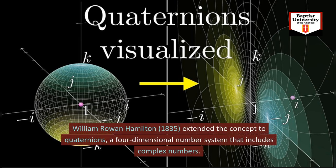William Rowan Hamilton, 1835, extended the concept to quaternions, a four-dimensional number system that includes complex numbers.